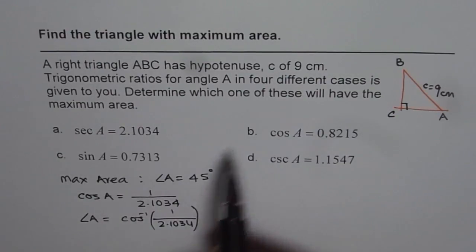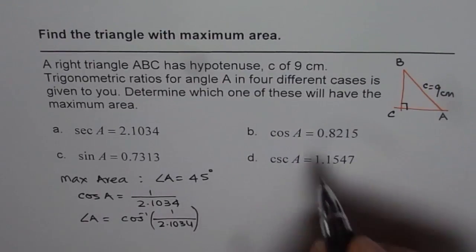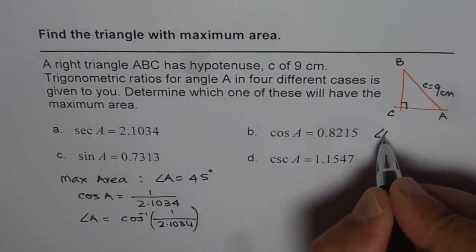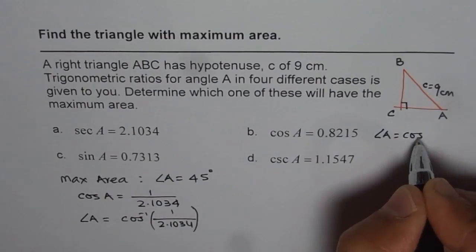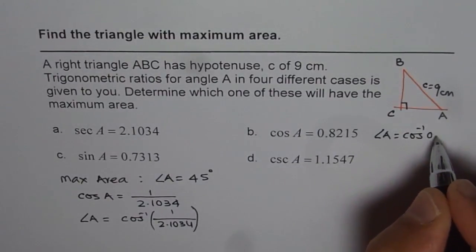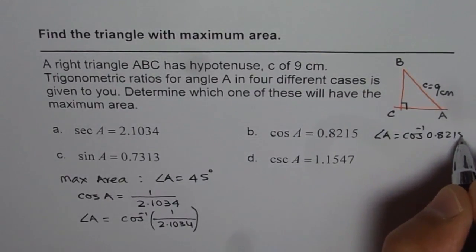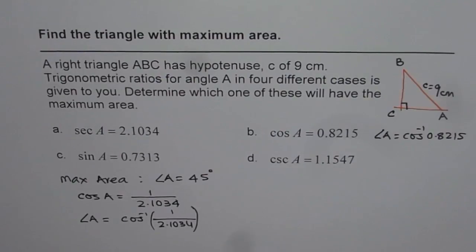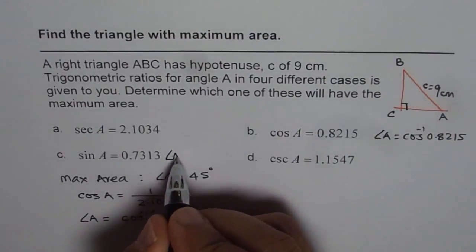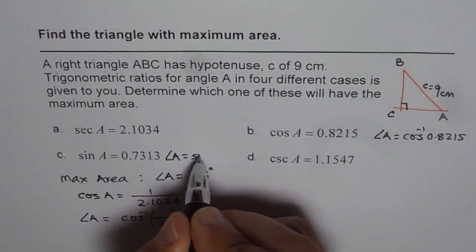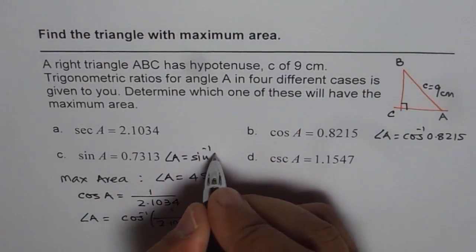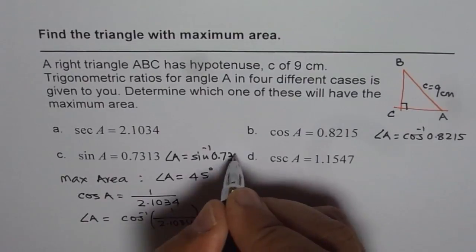Now, for cos A and sin A is very simple. In this case, you know, angle A is equals to cos inverse of 0.8215. You can use your calculator, find this answer. And here, you know, angle A is equal to sin inverse of 0.7313.